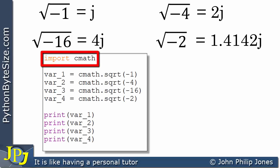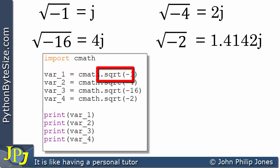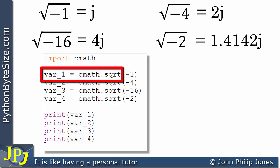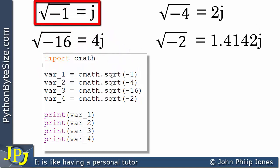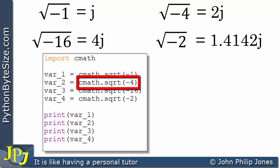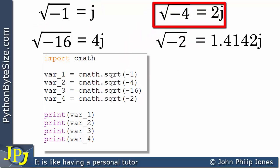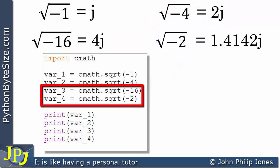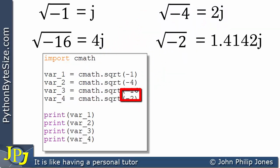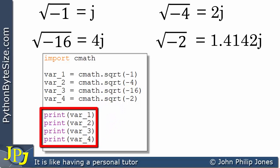Let's now consider this computer program. On this line I'm importing cmath. On this line I'm using the cmath module, and from the cmath module I'm using the square root function. I'm finding the square root of minus 1 and assigning it to var_1. Then I'm finding the square root of minus 4 — and we can see that the square root of minus 4 is equal to 2j. These two lines are finding the square root of minus 16 and minus 2 respectively, and these four lines are printing out each of the variables in turn.